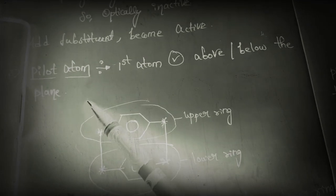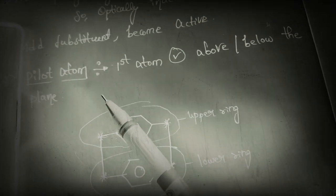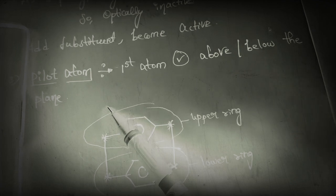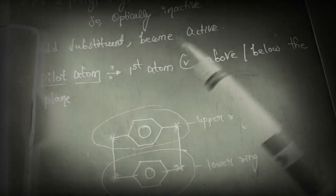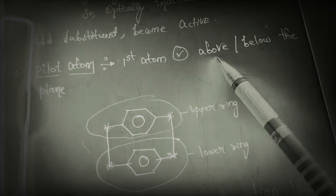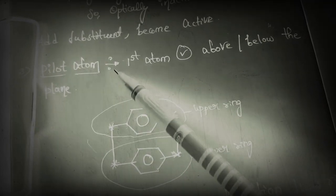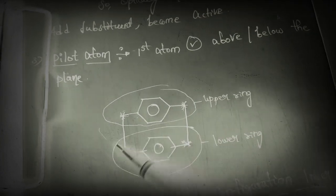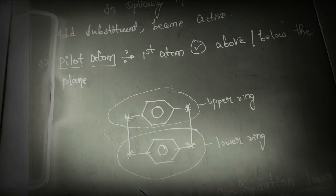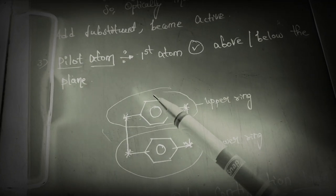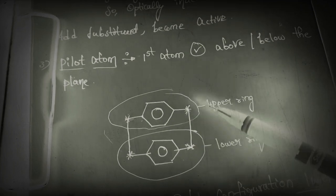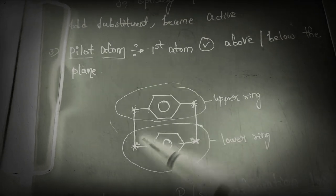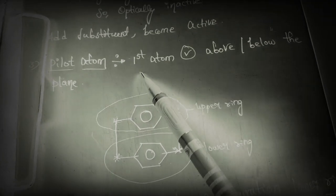Next we should know about the pilot atom. In our previous classes on spiro compounds and ansa compounds, we also discussed the pilot atom. The first atom present above or below the plane is called the pilot atom. We consider this as the lower ring and this as the upper ring — one plane and the second plane, like that.